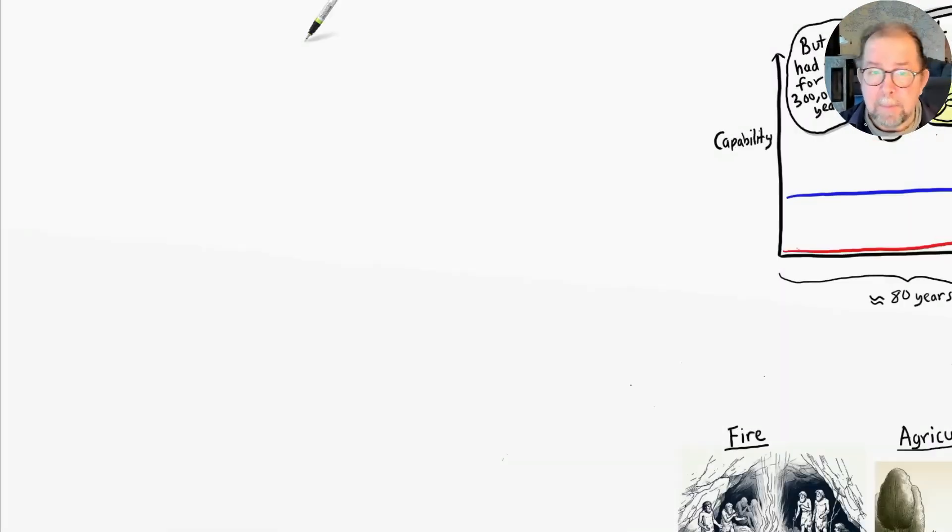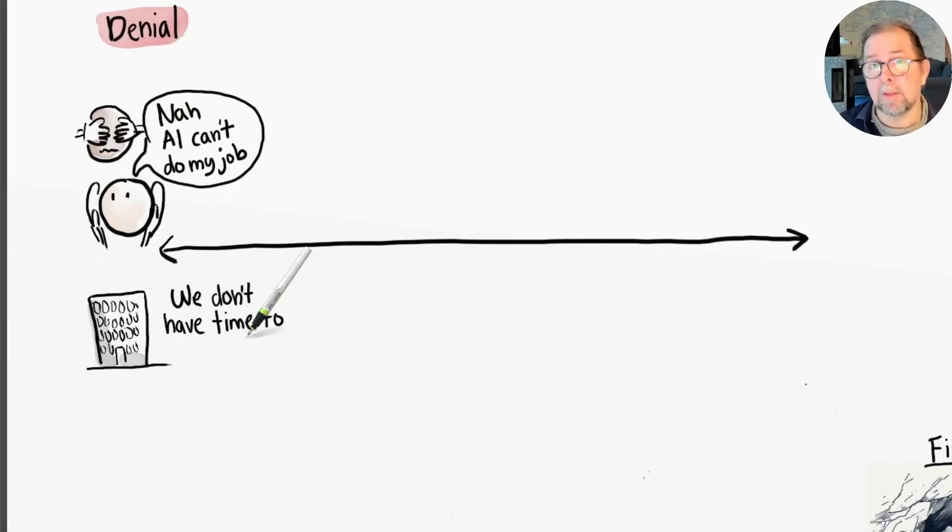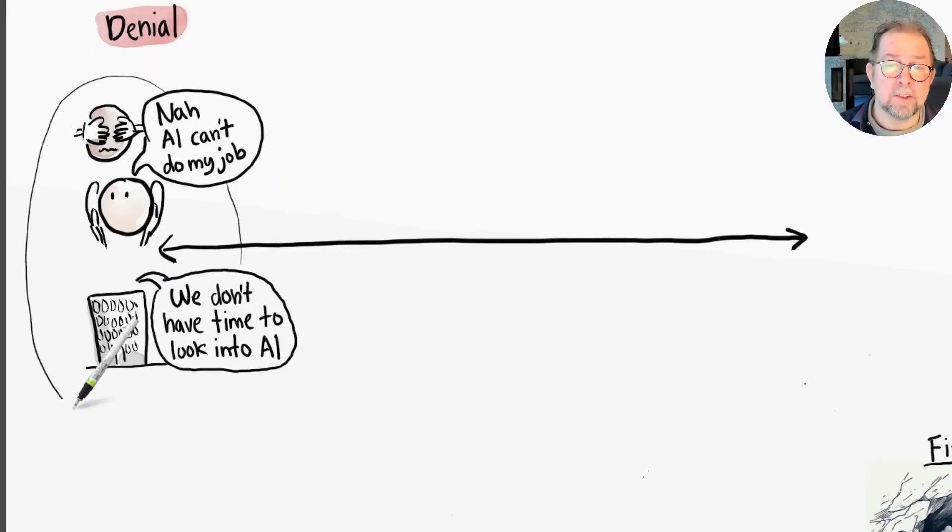I've noticed that people and companies tend to fall into different mindset categories when it comes to AI. On one side we have denial - the belief that AI cannot do my job, or we don't have time to look into this technology. This is a dangerous place to be. A common saying is: AI might not take your job, but people using AI will. And this is true for both individuals and companies.